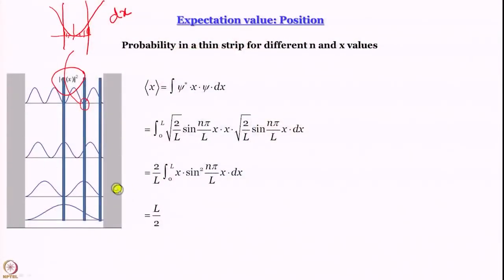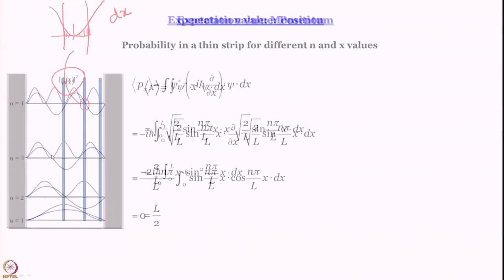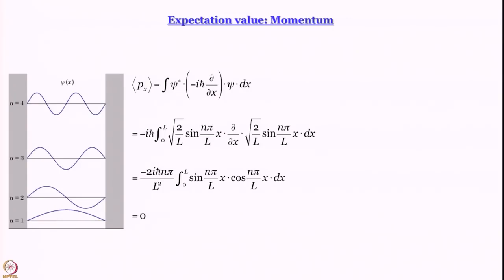Taking the strip at x = L/2: for n=1 probability is maximum, very small for n=2, and it varies accordingly. Now let us talk about momentum. For momentum, the operator is -iℏ d/dx, and working out the integral gives an expectation value of zero — the average value of momentum is 0. This is interesting: we said a little while ago that a particle in a box can never be at rest, but the expectation value of momentum is 0.